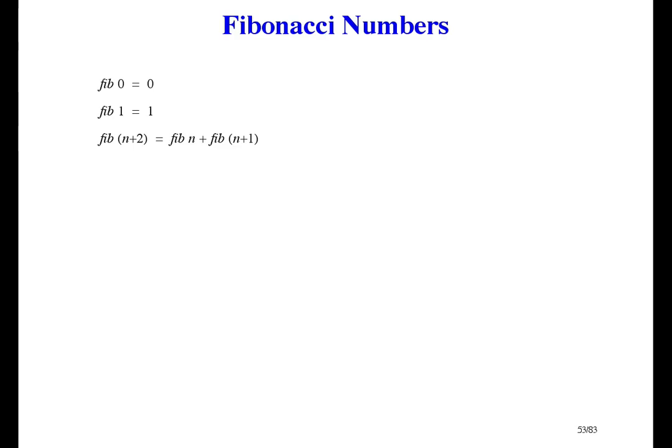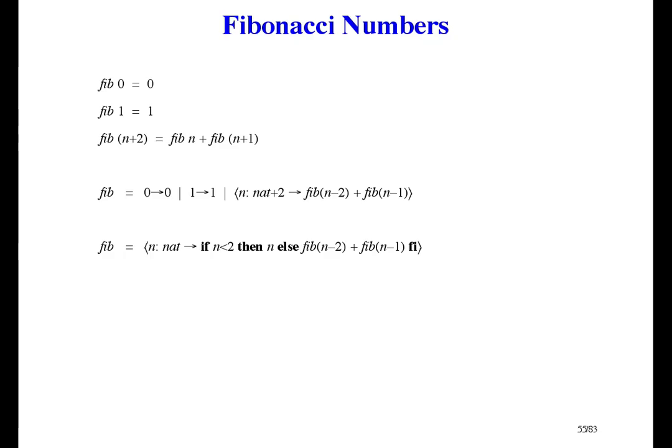Here's one way to define the Fibonacci numbers: Fibonacci of 0 and 1 are given, and after that each Fibonacci number is the sum of the previous two. Here's another way: 0 maps to 0, 1 maps to 1, and then n maps to Fib of n minus 2 plus Fib of n minus 1. Or you can use an if-then-else if you prefer. Each of these definitions is very close to being a program in some programming language — maybe some minor syntactic differences — but the execution time is exponential and we can do much better even without functions.